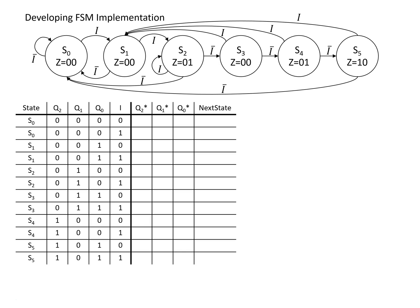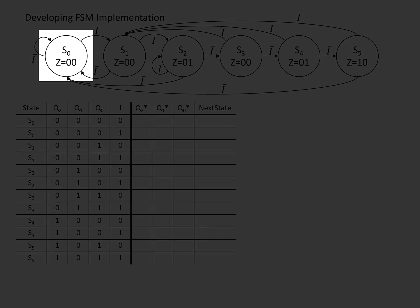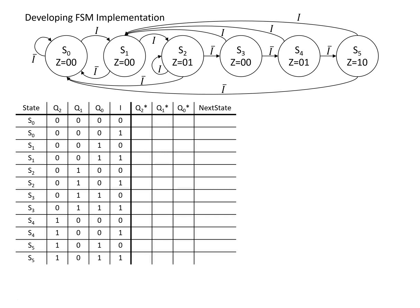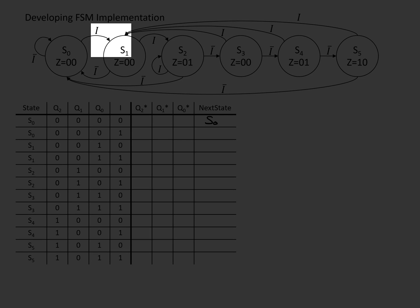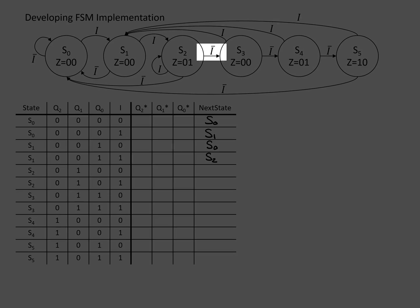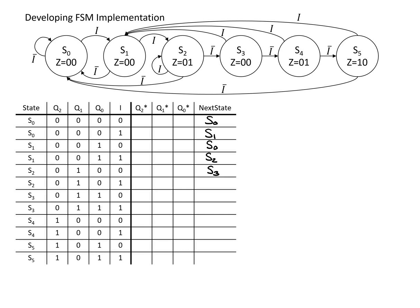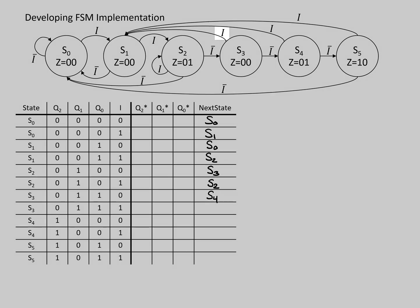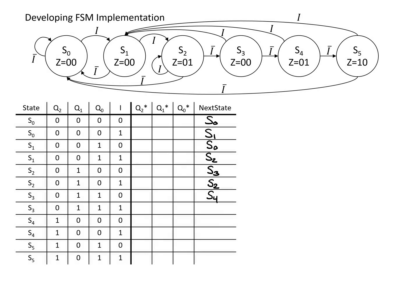We go from our current state to the abstract next state. Looking at S0, if the input I is 0, we stay in S0, and if the input is 1, we go to S1. From S1, if the input is 0, we go back to S0, and if the input is 1, we go to S2. From S2, if the input is 0, we go to S3. From S3, if the input is 0, we go to S4, and if the input is 1, we go back to S1.